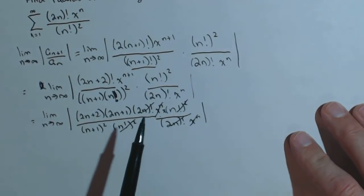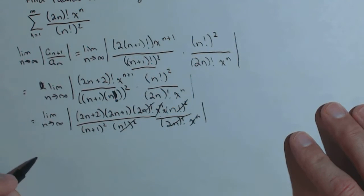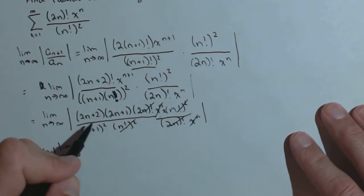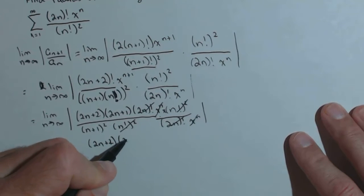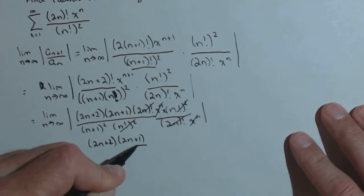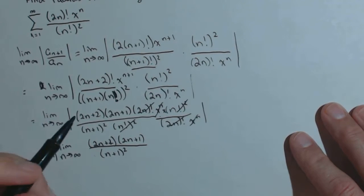The next thing we'll do is we'll pull out anything that doesn't depend on n, which in this case is just this x. And I'm going to write it out in front of the limit. So, the absolute value of x. Limit as n goes to infinity. I no longer need the absolute value here because this is all going to be positive. On top, I've got 2n plus 2 times 2n plus 1 over n plus 1, the quantity squared.